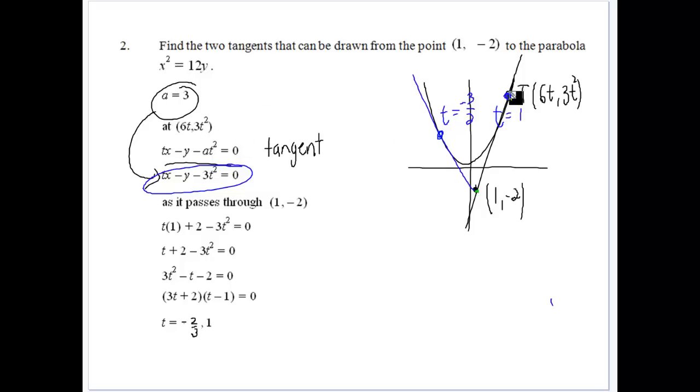So at a general form, we can draw a tangent that would be from (6t, 3t squared). Now what we want to do is find specific tangents that will go through the point (-1, -2). There's obviously two tangents that will go through that particular point. So that's where we get the 6t and the 3t squared because a was equal to 3. It was 4ay, so 4a was 12, and so a was equal to 3.